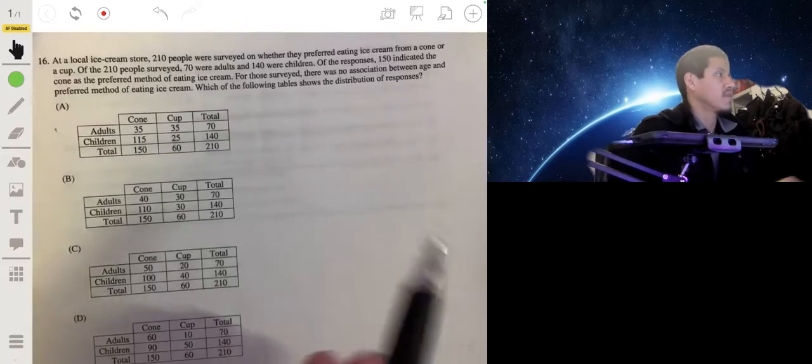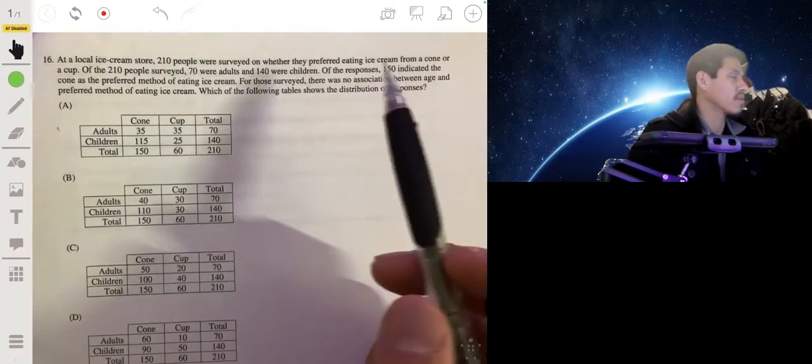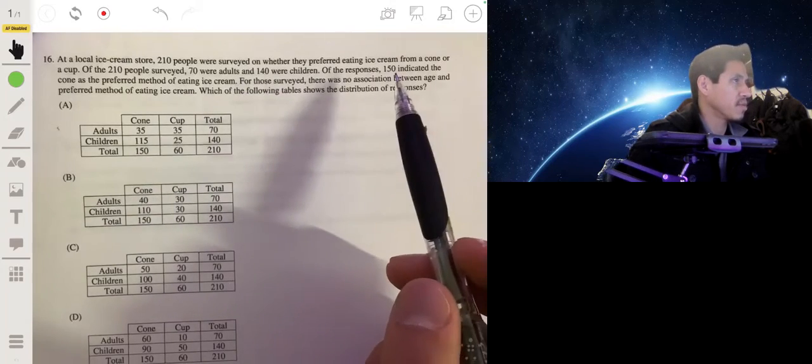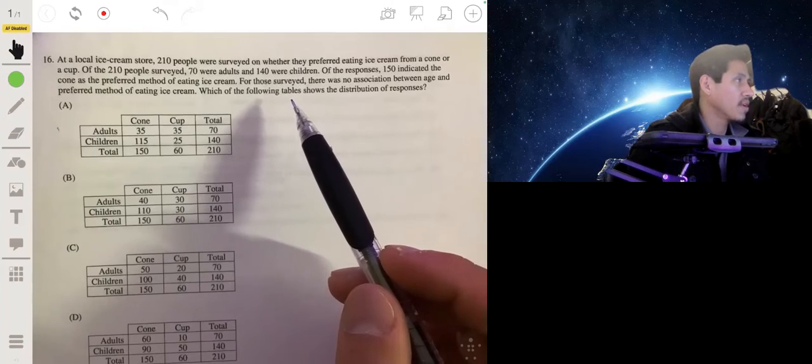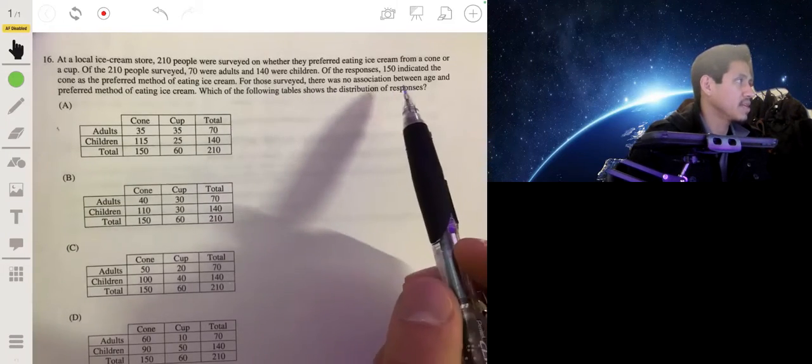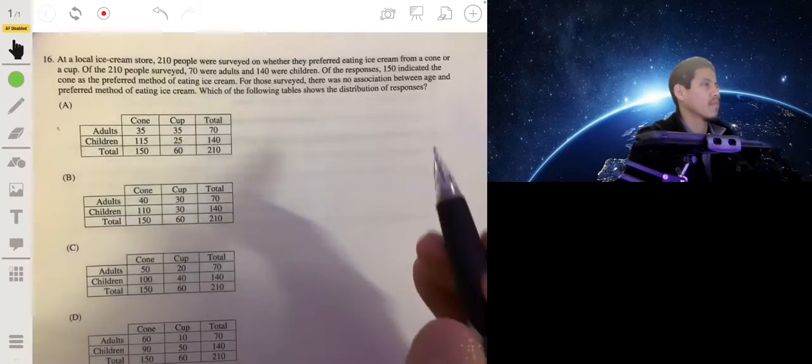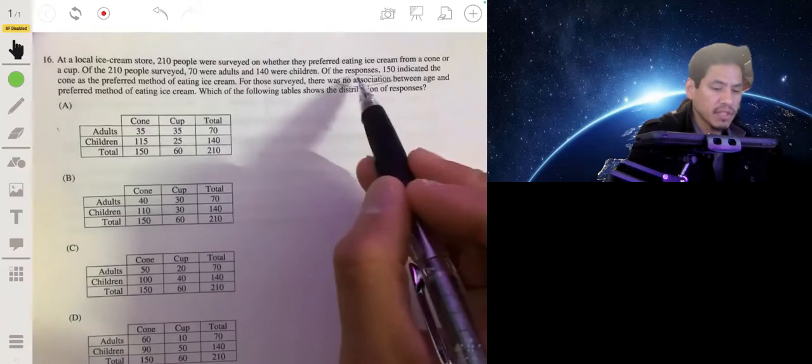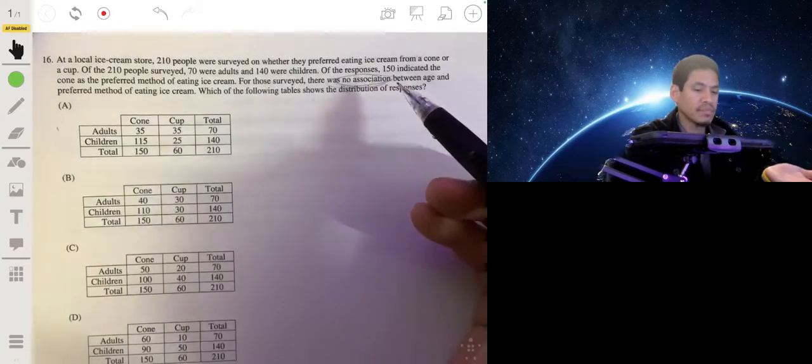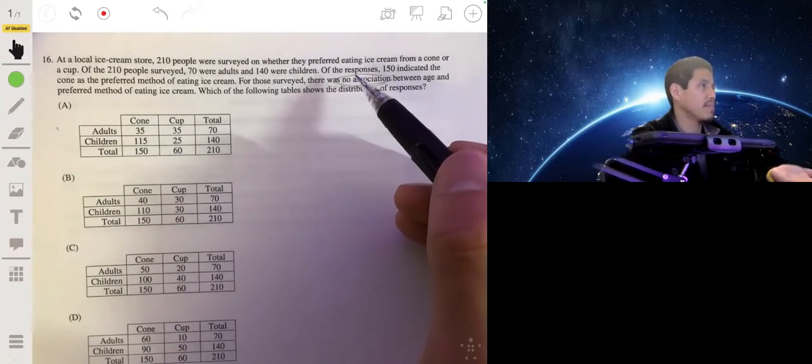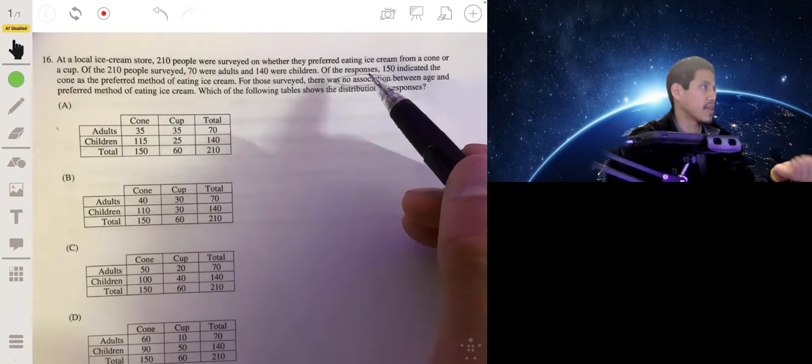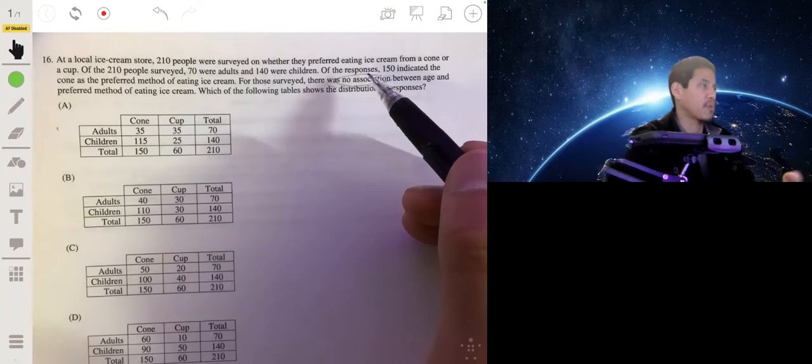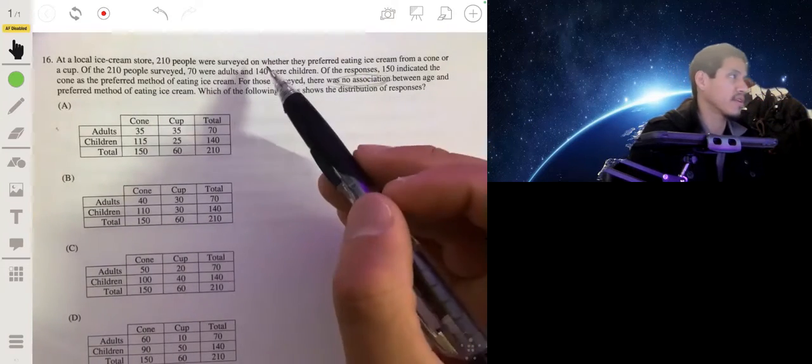At a local ice cream store, 210 people were surveyed on whether they prefer to eat ice cream from the cone or from the cup. Of the 210 surveyed, 70 were adults and 140 were children. Of the responses, 150 indicated that cone was preferred method of eating ice cream. For those surveyed, there is no association between age and preferred method of eating ice cream. Which of these tables shows this? Okay, so for there to be no association, that means the proportion of adults that prefer eating ice cream with the cone is going to be the same as the proportion of the kids eating ice cream with the cone.